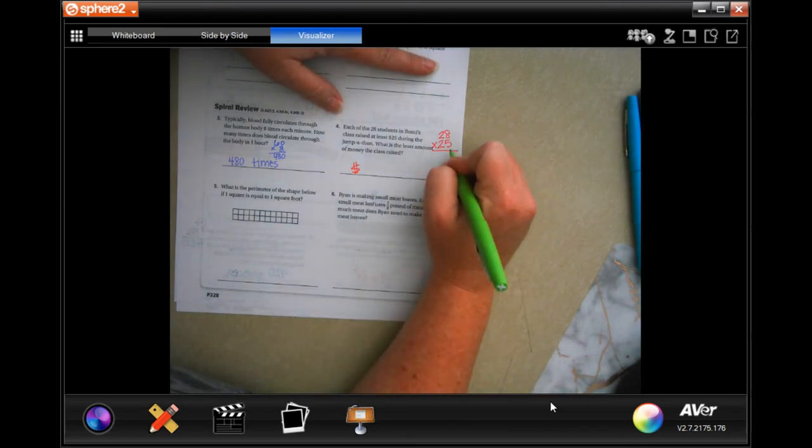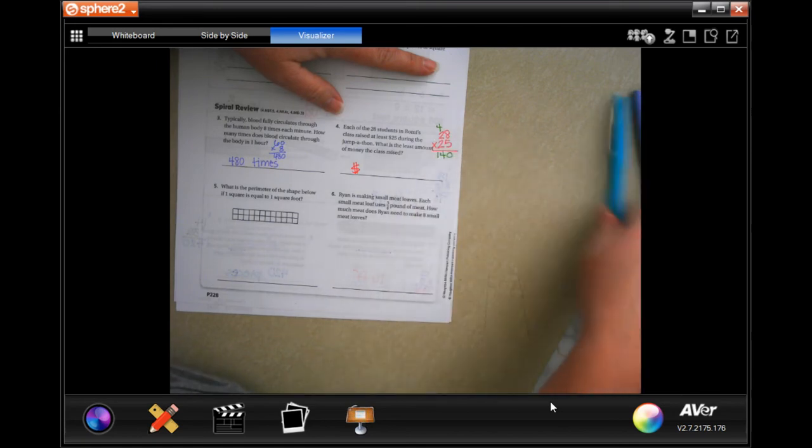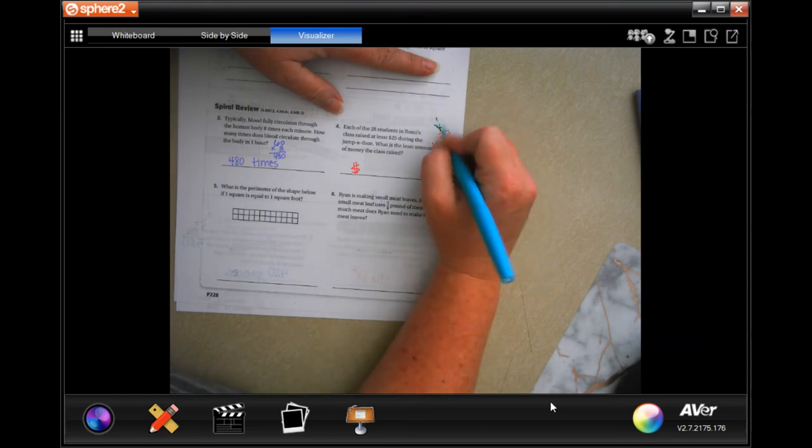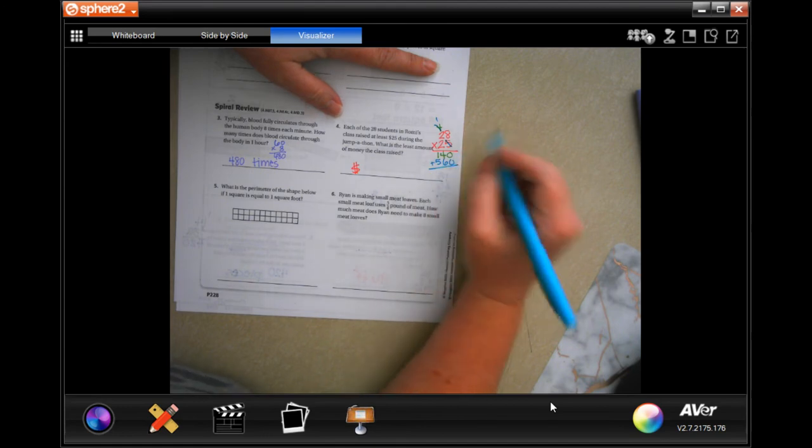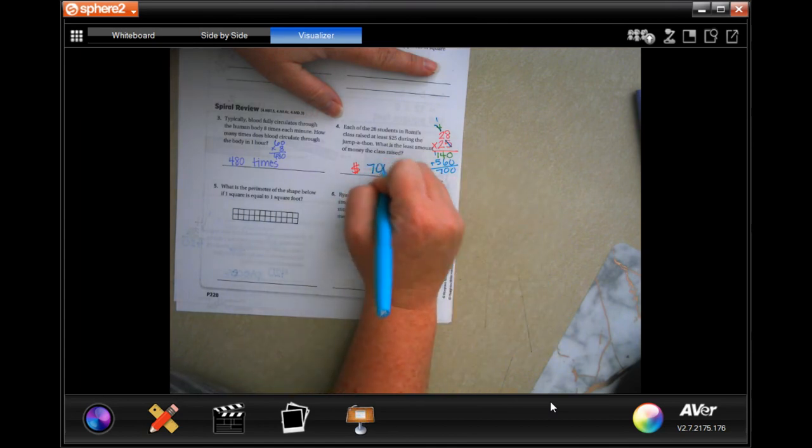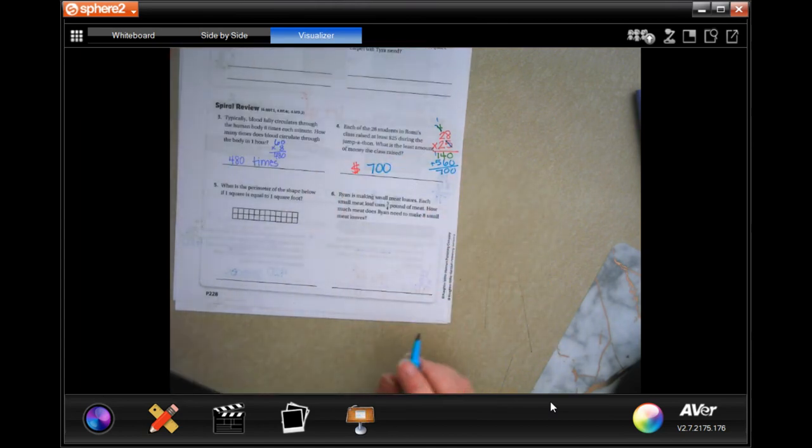So, five times eight is 40. Five times two is 10, plus four is 14. Now, we're going to go through them. We're going to go tic-tac-toe. Two times eight is 16. Carry the one. Two times two is four. Plus one more. Five. Add them up. Okay, zero. Ten. Carry the one. And seven. So, $700.